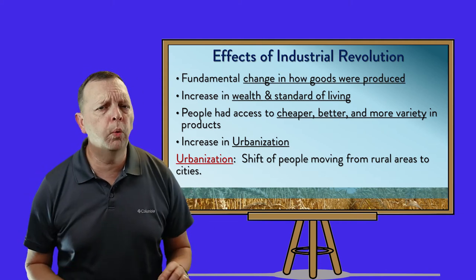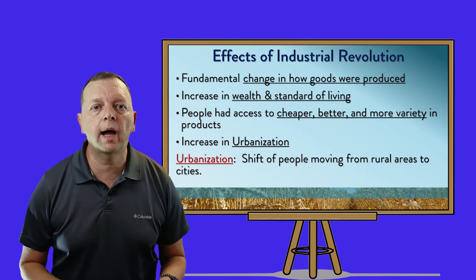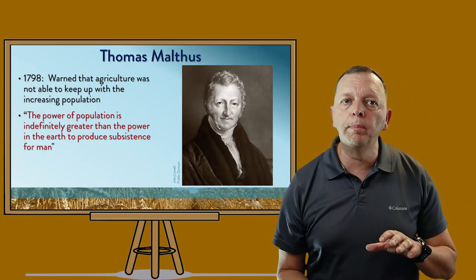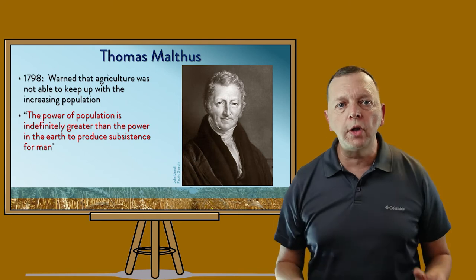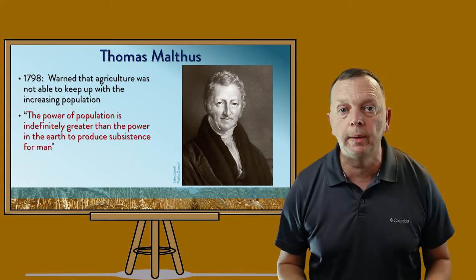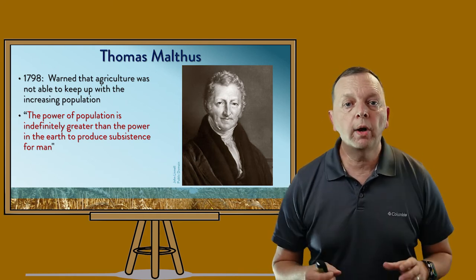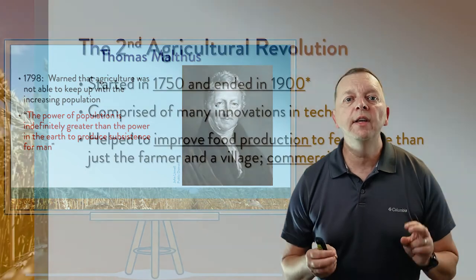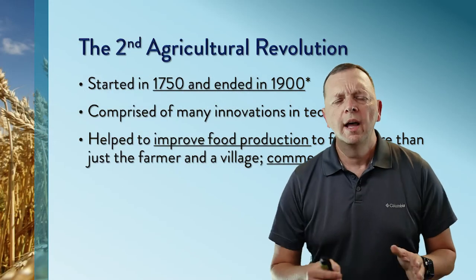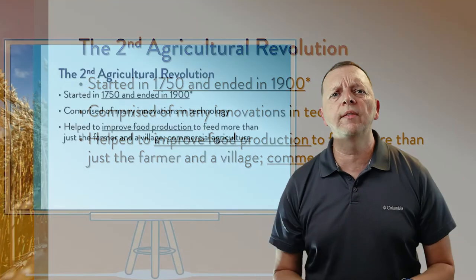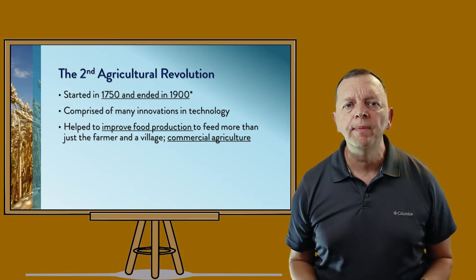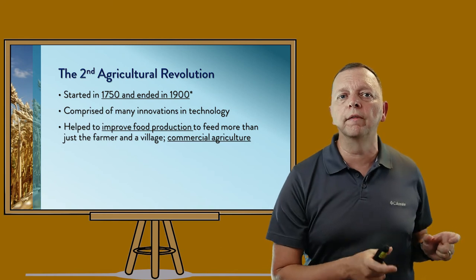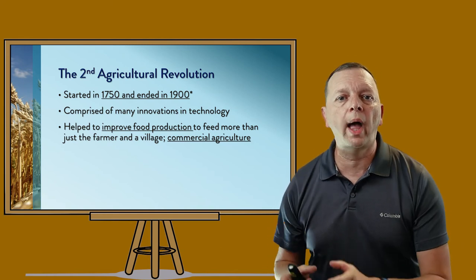Some people were worried about this. One was a guy by the name of Thomas Malthus, who in 1798 wrote a book warning that agriculture was not going to be able to keep up with the increasing population. However, what he didn't realize was that he was right at the beginning of the Second Agricultural Revolution, which roughly happened between 1750 and about 1900. This revolution actually took many of the innovations of the Industrial Revolution and applied them to agriculture.